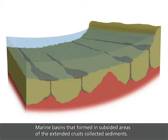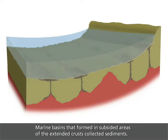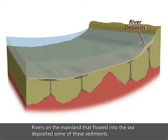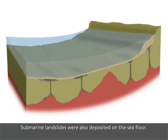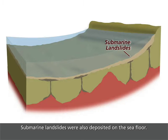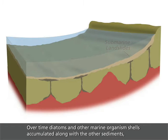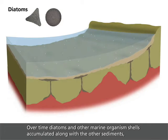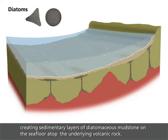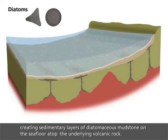Marine basins that formed in subsided areas of the extended crust collected sediments. Rivers on the mainland that flowed into the sea deposited some of these sediments. Submarine landslides were also deposited on the seafloor. Over time, diatoms and other marine organism shells accumulated along with the other sediments, creating sedimentary layers of diatomaceous mudstone on the seafloor atop the underlying volcanic rock.